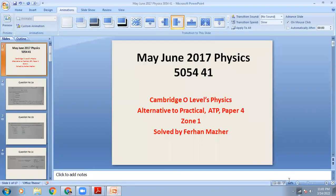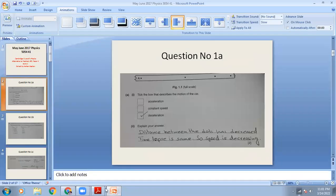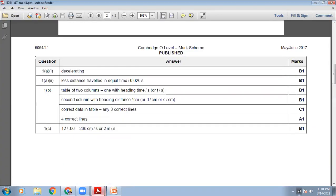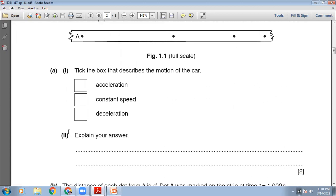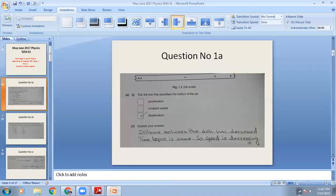So I will say deceleration — put a tick there. Now explain your answer: between A and B, B and C, and C and D, the time lapse is the same — 0.02 seconds — but the distance traveled is smaller, gradually decreasing. So from that, because the time lapse is same but the distance between the dots is getting smaller and smaller, that means the car is slowing down. Written answer: the distance between the dots has decreased, the time lapse is the same, so speed is decreasing.